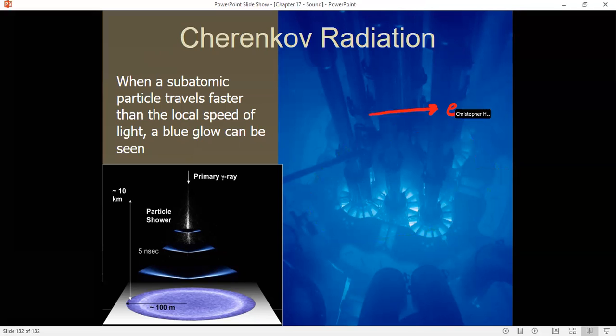Beta particles, which are super fast electrons, are traveling very close to C, which is the speed of light in a vacuum. But they're actually in water, which has a slightly slower speed. Speed of light in a vacuum is 3.0 times 10 to the 8 meters per second. Speed of light in water is more like 2.5 times 10 to the 8 meters per second.